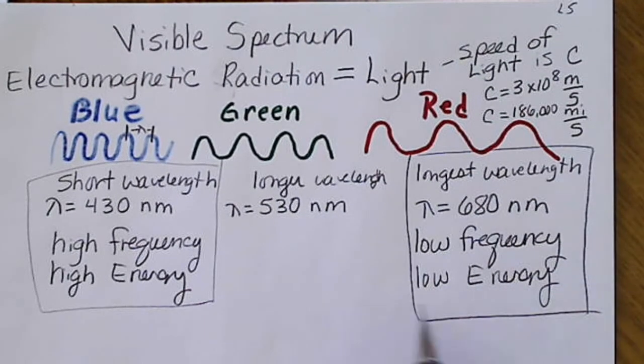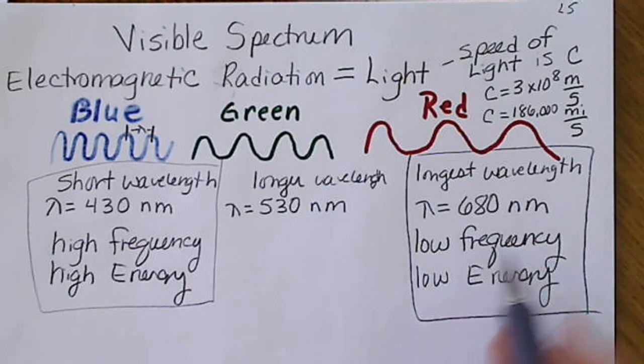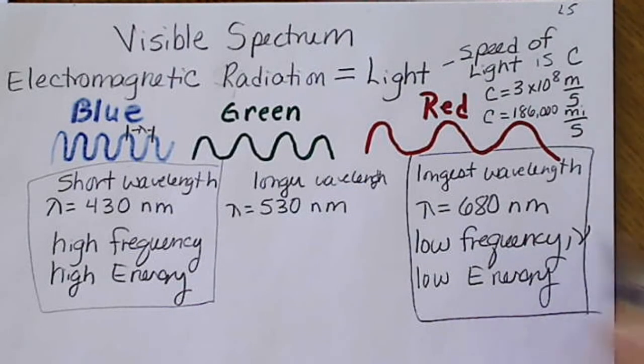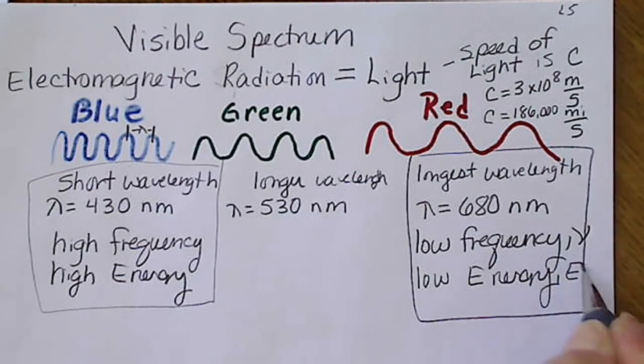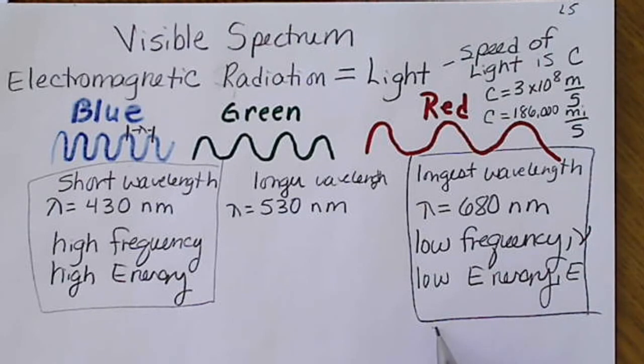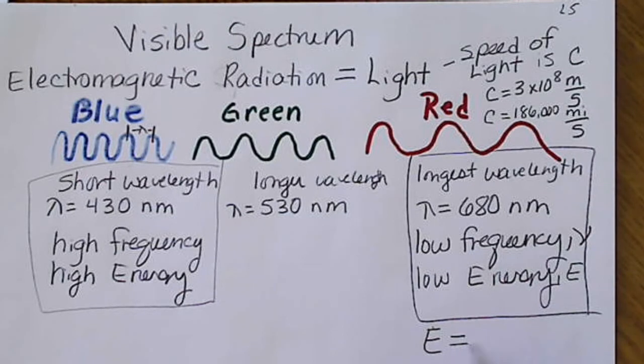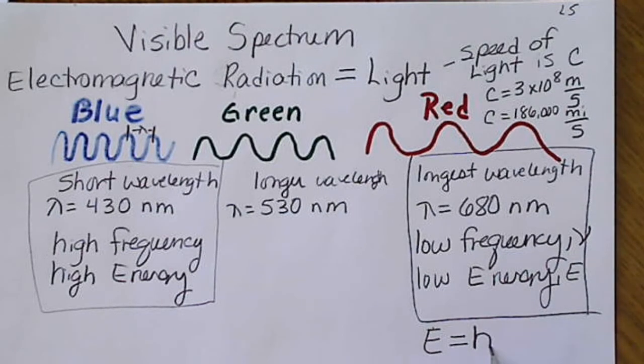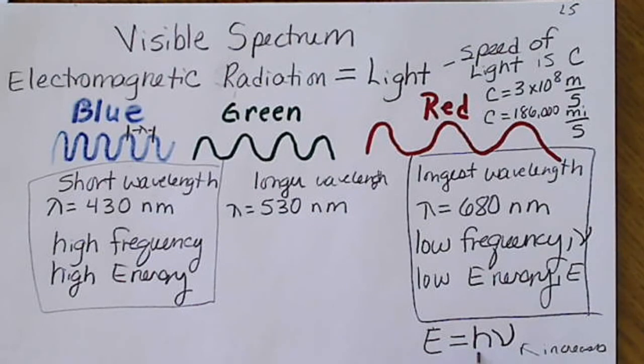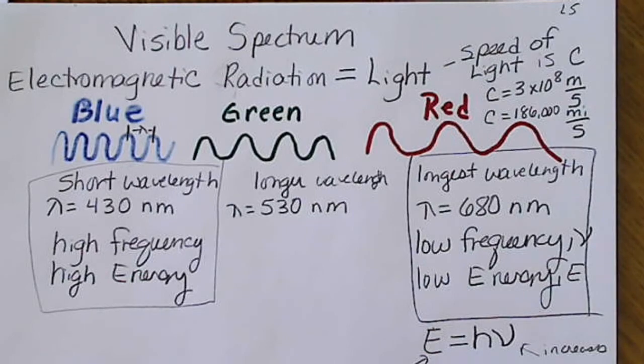That comes from the fact that frequency is represented by ν (that funny looking V), and energy is E. Since the energy of electromagnetic radiation equals a constant times the frequency, when the frequency increases and it's multiplied by this constant, the energy also increases.